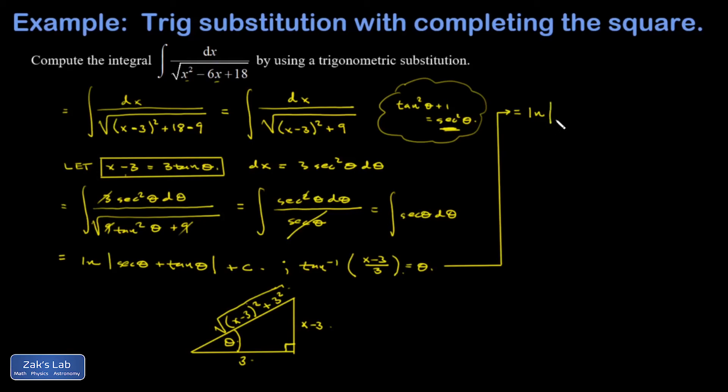As a natural log absolute value. Now I have the secant of the angle whose tangent is (x - 3)/3, and I just figured out that's going to be √[(x - 3)² + 3²]—I'll simplify that at the very end—over 3, plus the tangent of that angle, which is just (x - 3)/3, plus an arbitrary constant.